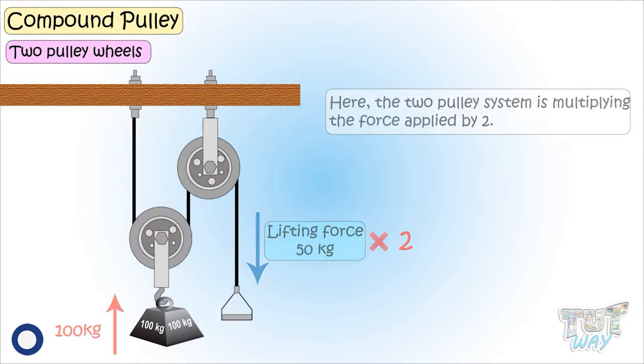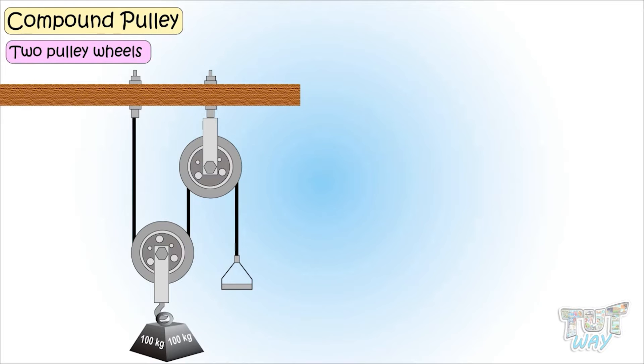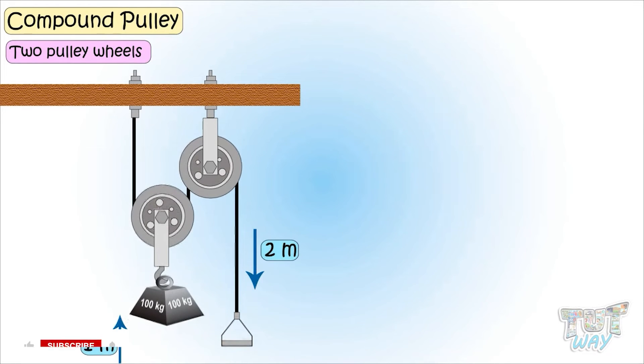So the greater the mechanical advantage, the lesser is the force required, but the distance to which the weight has to be pulled down will double. That is, the weight rises one meter here, but now we have to pull the loose end of the rope twice as far, that is by two meters.